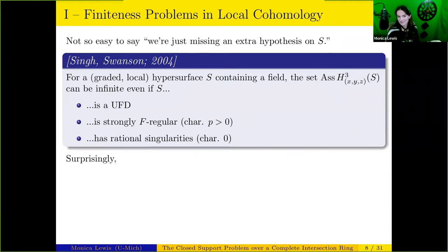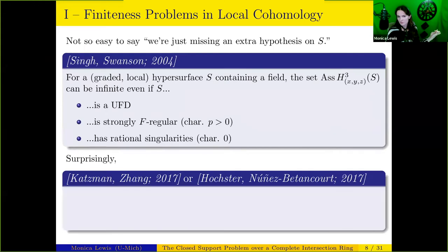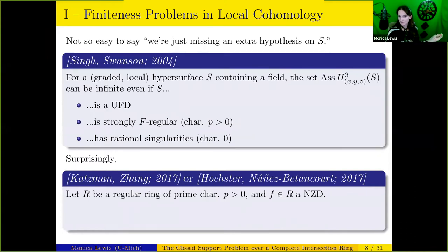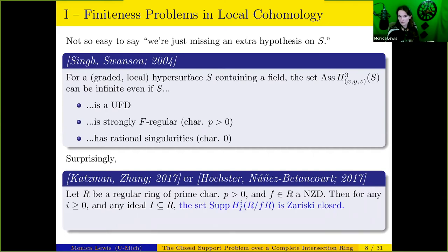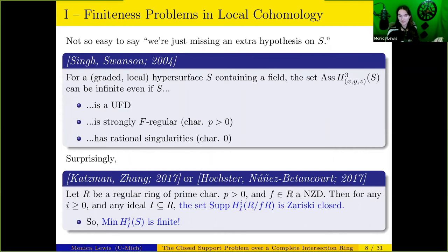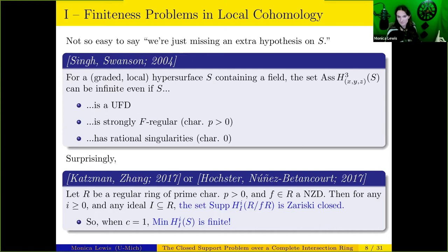That makes the following result a little bit surprising. Given that you expect to lose control over the set of all associated points, you actually do have control over some things. Due to Katzmann and Zhang in 2017, and independently Hawks, Huneke, and Núñez-Betancourt: if you have a regular ring of characteristic p and a nonzero divisor f inside it, then for any cohomological degree i and any ideal I, the local cohomology of that hypersurface has closed support. So while you may lose control over all associated primes, the set of minimal associated primes is finite, and the set-theoretic vanishing or non-vanishing question is at least in principle more tractable. This result is currently only known in codimension 1 and in prime characteristic p.